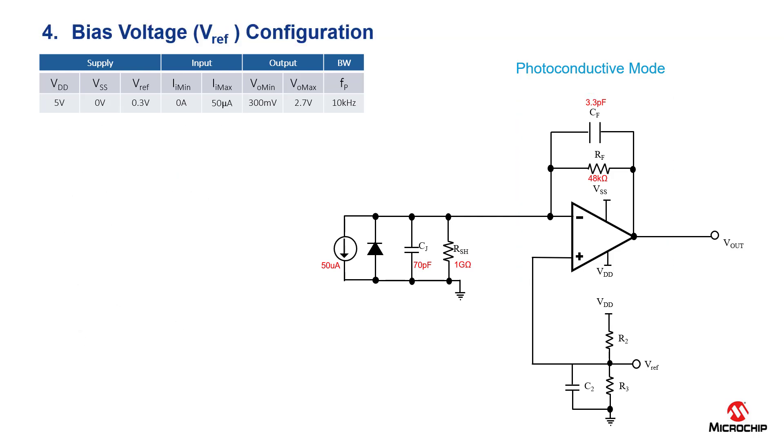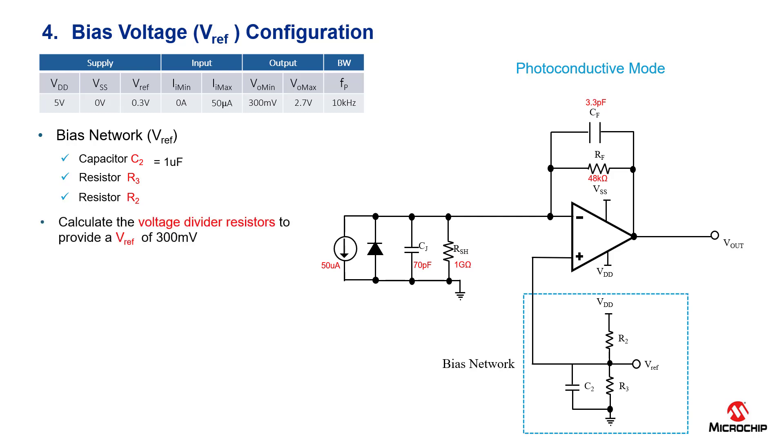For step number four, we need to configure the bias network that will provide a 300 millivolt reference voltage given a supply of 5 volts. To do this, we calculate the voltage divider resistors R2 and R3 by using the voltage divider equation shown on the screen.